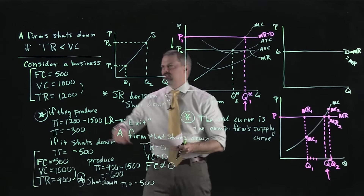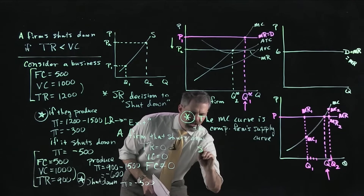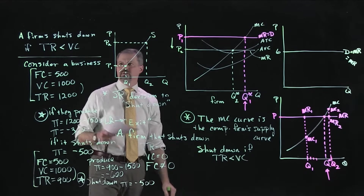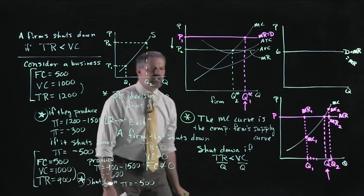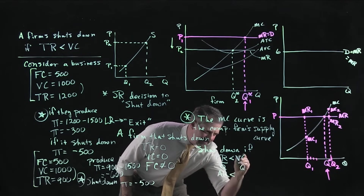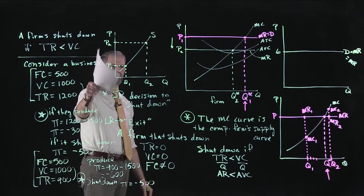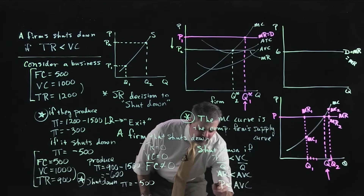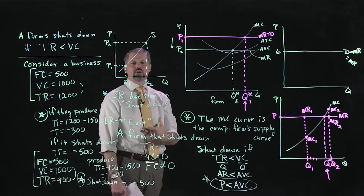Let's manipulate the shutdown condition. You shut down if total revenue is less than variable cost. Dividing both sides by Q: you shut down if average revenue is less than average variable cost. Since average revenue always equals price, this gives us the shutdown condition: you shut down if price falls below average variable cost. That's what we'll call the firm's short-run shutdown condition.